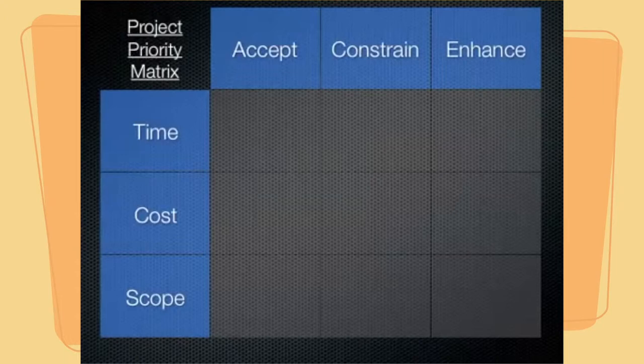First, we can either accept changes to one of these three aspects. We can constrain an aspect, meaning that it is a priority that this aspect not change, or we can choose to enhance a particular aspect if possible, that is, to make it better.